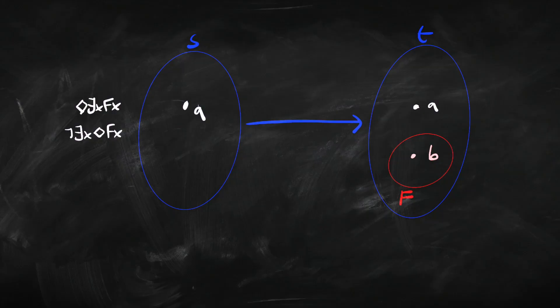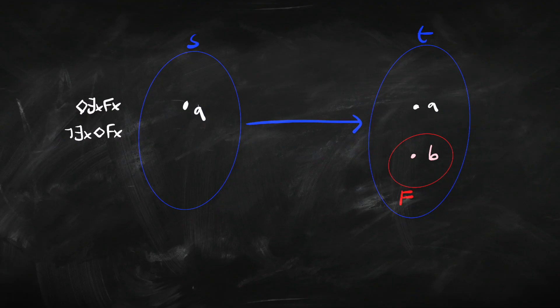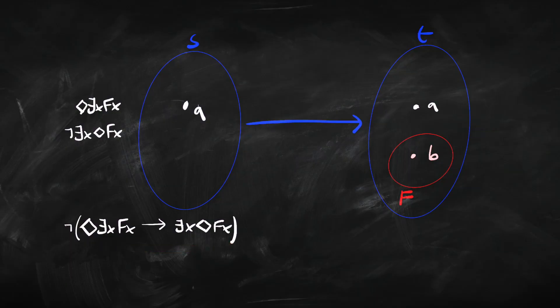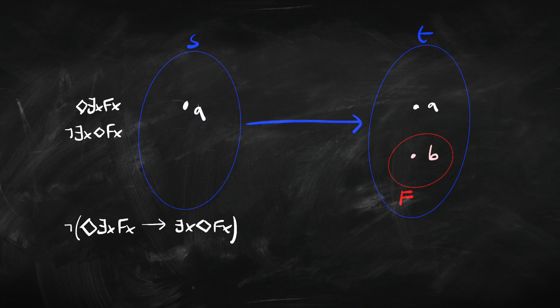Let's see what happens in this model. Over in world T, B is F, so something is F. So over in world S, it's possible that something is F — because S has an arrow to T and something is F there. But is it the case that something is possibly F over in S? If there's going to be something that's possibly F in S, it's got to be A because A is the only thing. But A isn't possibly F — in the only other possible world, A is not F. So it's not the case that there's something that's possibly F over in S. That gives us a counterexample to the Barcan sentence: the antecedent is true but the consequent is false.